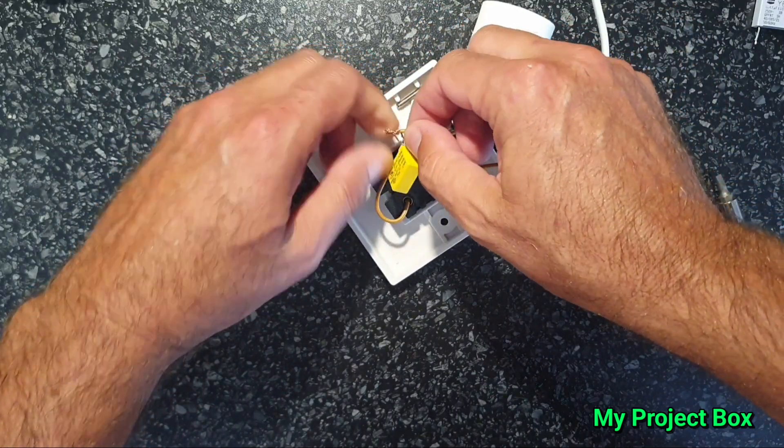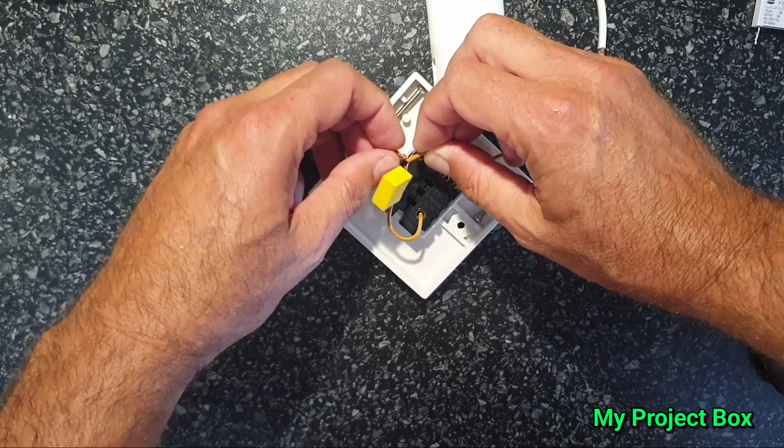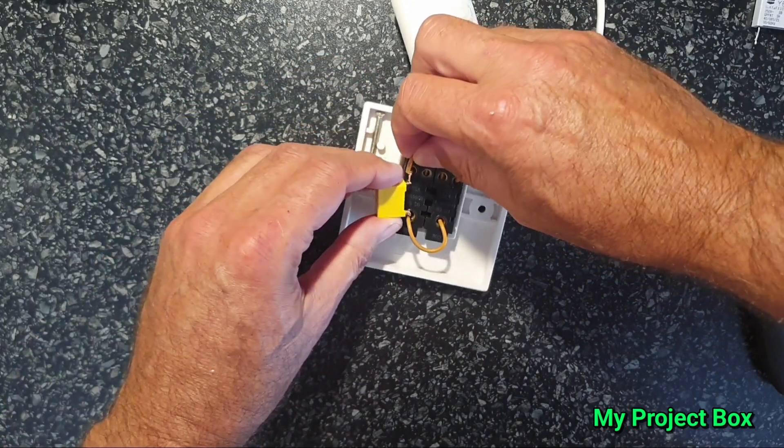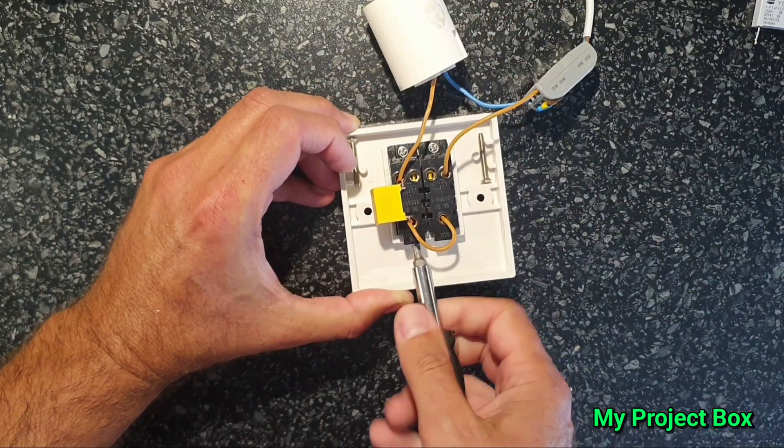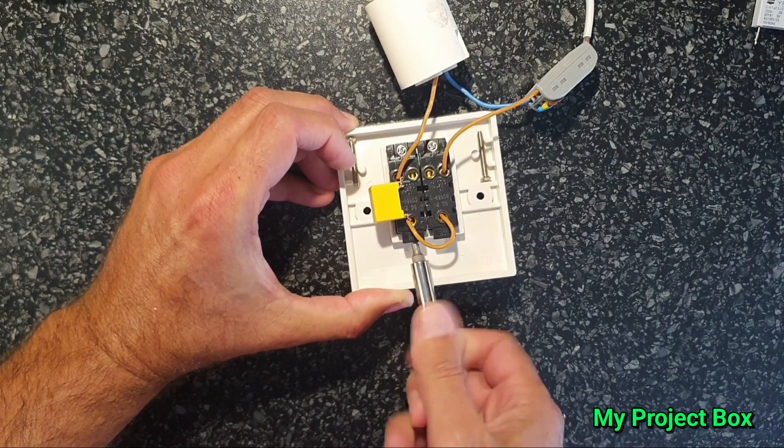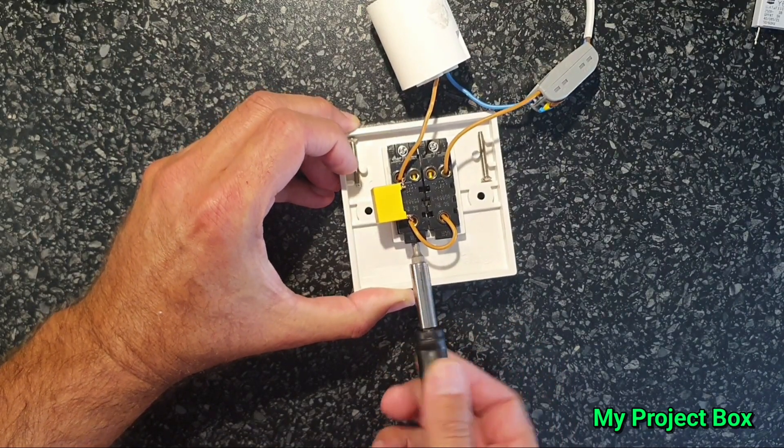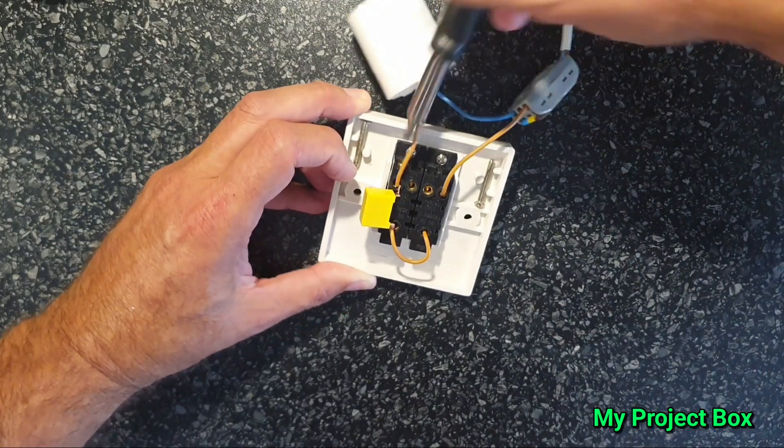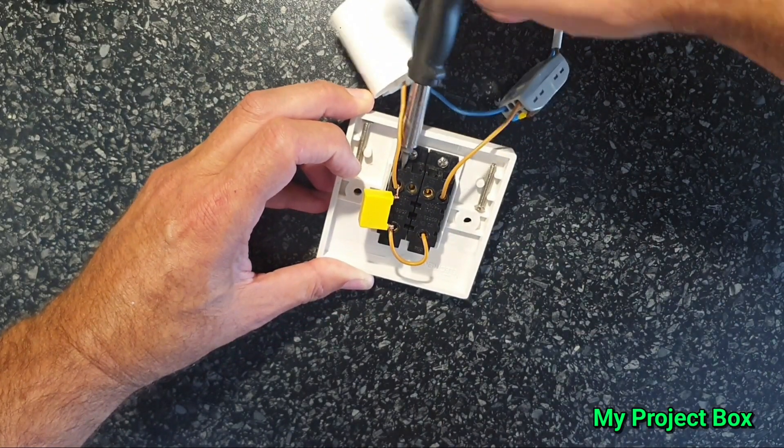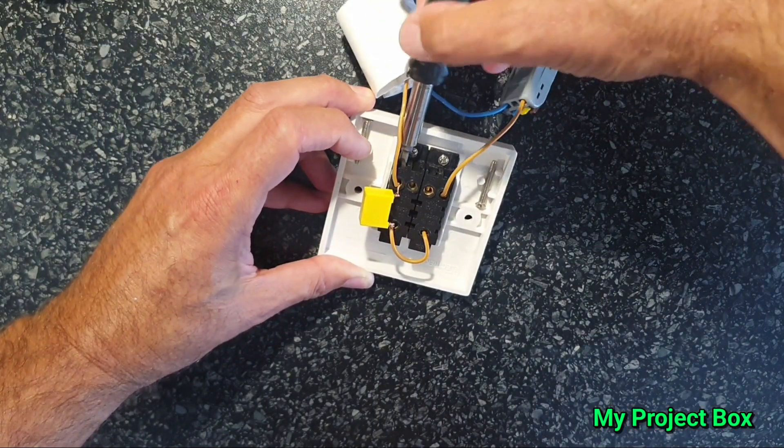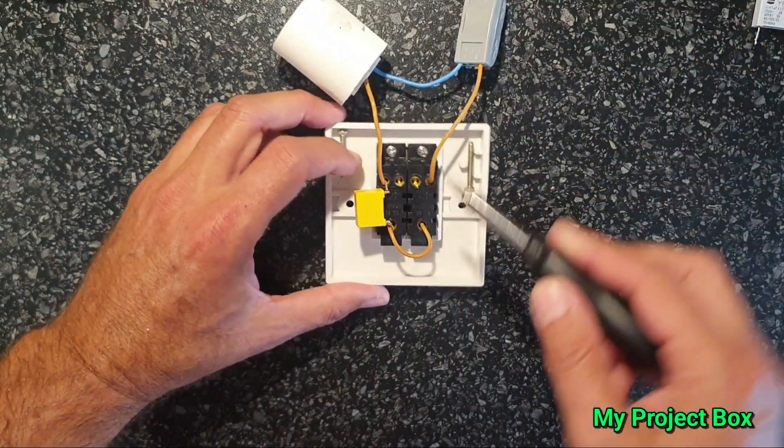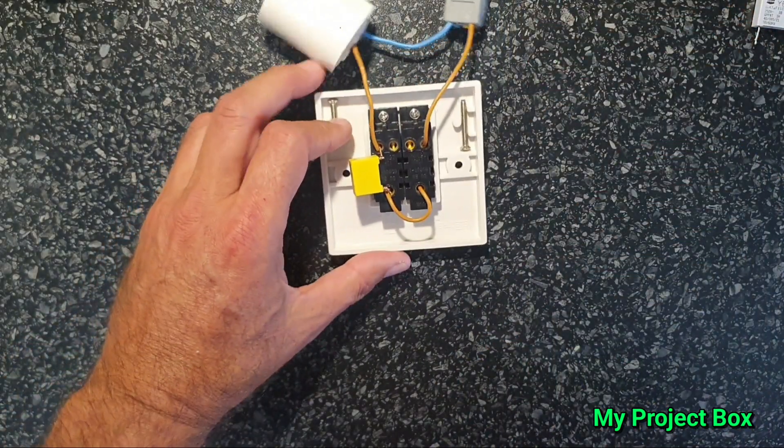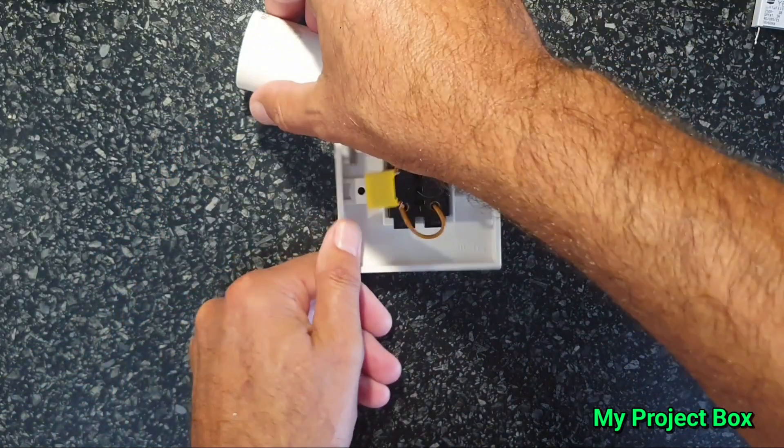And the other terminal from that same switch twists onto the wire that goes to the lamp base, the live out of the switch. So it's into the first switch, that's the on-off switch, then wired in series to the other switch with the capacitor across it, and then out to the lamp base. And the neutral goes straight across the lamp base. That's it, really simple.